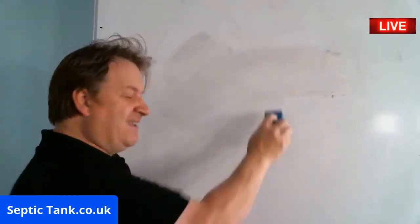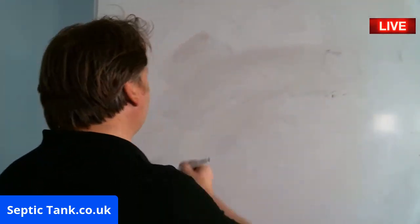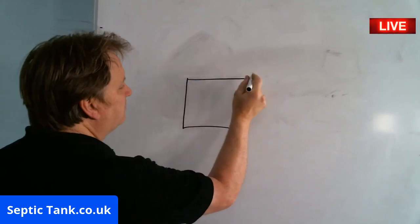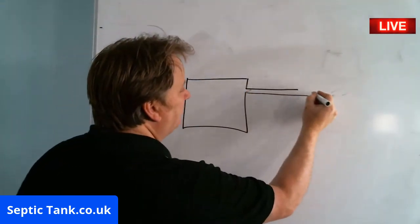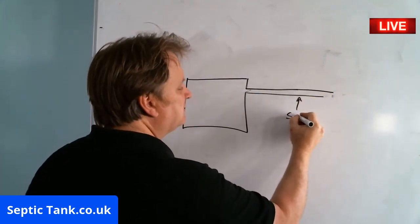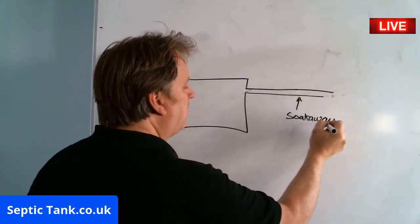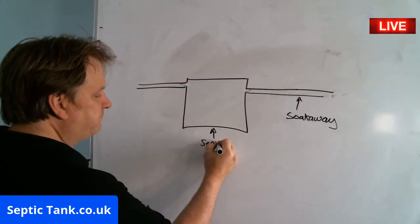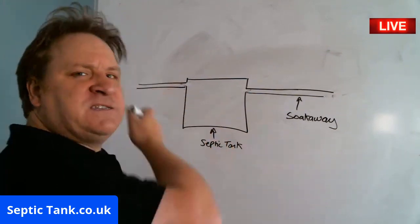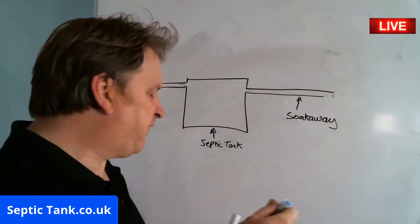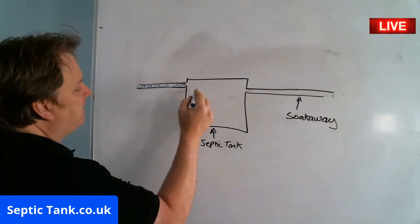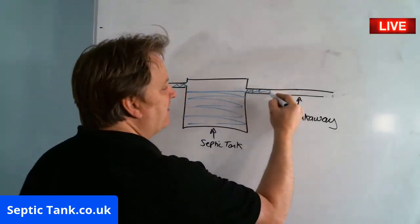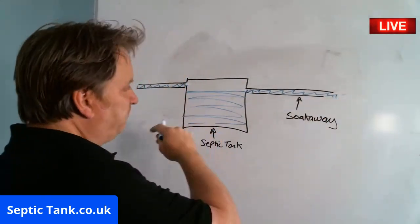You're going to see my fantastic artwork now. So let's say this is your septic tank in the ground, and you've got an outlet pipe which goes to your soak away over here. And here's your inlet pipe. Basically, all the wastewater from your house comes down the inlet pipe and fills the tank up with liquid. Then that liquid, when it gets to a certain height, goes down into the soak away. That's how it works.